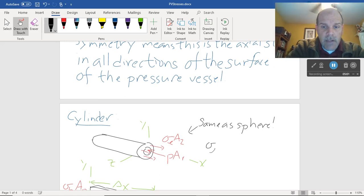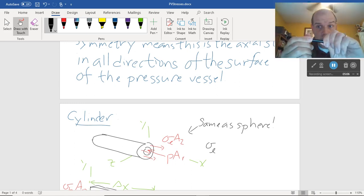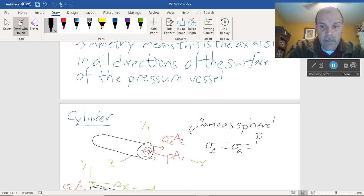Sigma l, as we're calling it, the longitudinal stress along the long direction. It's trying to pull the skin apart along the length of the pressure vessel, equals what we had for sigma a, which is equal pr over 2t. Okay, great.